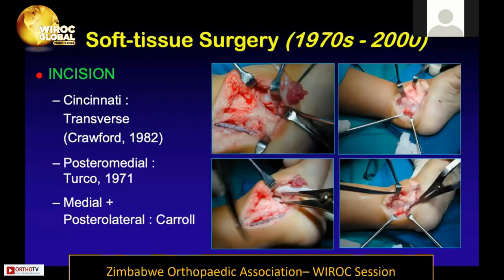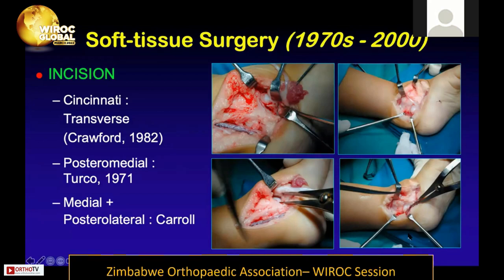Around the 1970s, starting with Turco, various soft tissue procedures became the norm. This is the typical posterior medial release described by Turco using a medial incision — showing exposure of the talonavicular joint, the subtalar and ankle joints. Going circumferentially from medial to lateral, this can be achieved by various incisions: the posterior medial incision or the Cincinnati transverse incision popularized by Crawford in the 1980s.